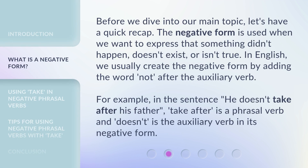Before we dive into our main topic, let's have a quick recap. The negative form is used when we want to express that something didn't happen, doesn't exist, or isn't true. In English, we usually create the negative form by adding the word 'not' after the auxiliary verb. For example, in the sentence 'He doesn't take after his father,' 'take after' is a phrasal verb and 'doesn't' is the auxiliary verb in its negative form.